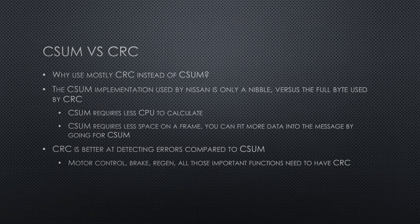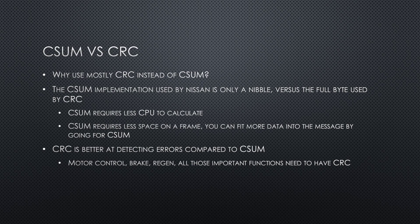A quick summary: it puzzles me a bit why Nissan alternates between CSUM and CRC. CSUM takes up less space and less CPU to compute, but CRC is way better at detecting faults while taking up more space. So it's really anyone's guess why Nissan uses both. I would predict that if they dropped one, it would be CSUM — but this is just a theory, so fight me in the comments if you know more.